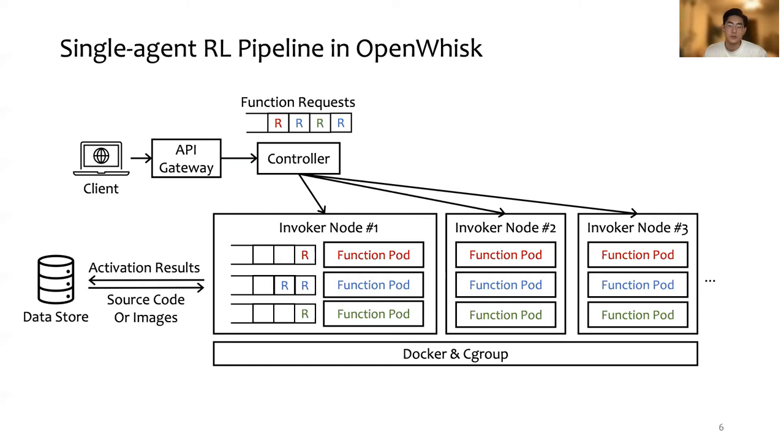To serve function requests, it is also the controller which decides whether to create a new function container or not, and where to place the container. Besides, it also decides the container sizes. The invoker then retrieves the function data from the database, executes the function, and writes the results back to the data store.